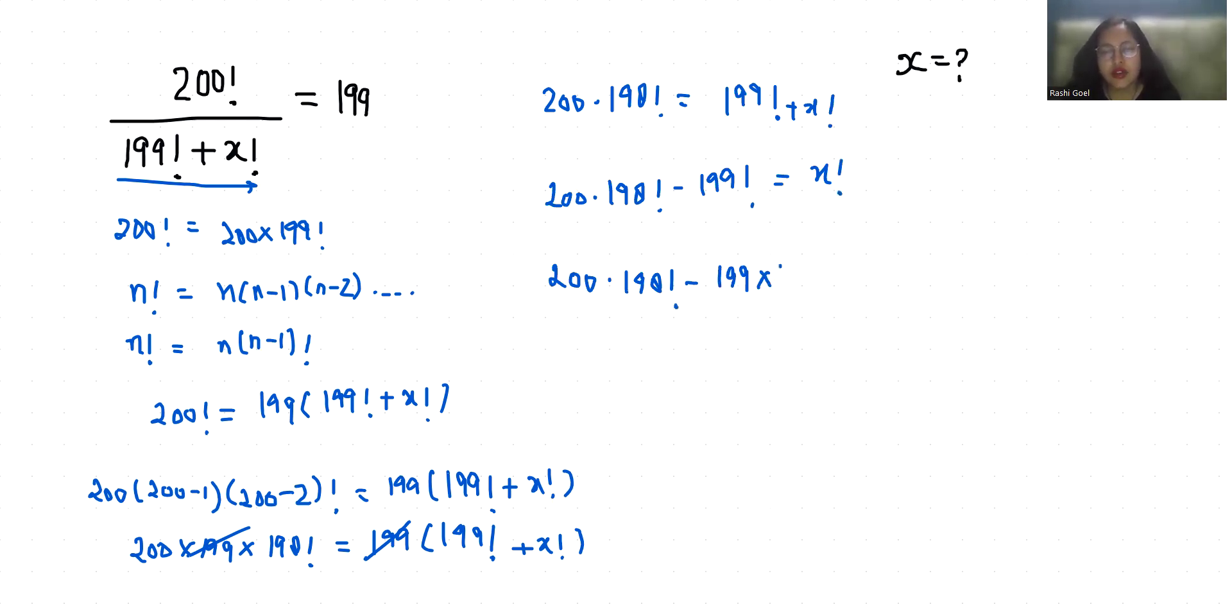So if 198 factorial is common, then 200 minus 199 equals 1, which means 198 factorial equals x factorial. So comparing both sides, the value of x is 198. I hope it's clear and you found it useful. Please give us a thumbs up and subscribe to my channel. Stay tuned for more upcoming videos.